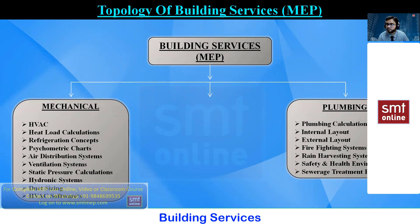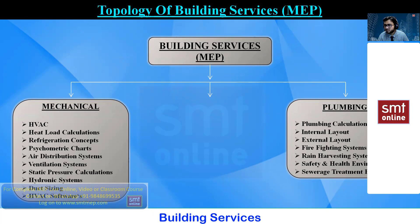We also have the firefighting system to provide safety for your building, equipment, and people. This is a separate area in plumbing. Again, we have the rain harvesting system to increase the water table. Safety and health environment are important — we work in a safe and healthy way. We also have the sewage treatment plant: if you want to recycle and reuse water, we treat it. This concept is very important when working on projects where there is water scarcity or shortage.